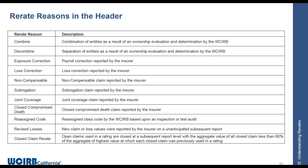The last re-rate reason is 'closed claim re-rate.' This occurs when claims are closing at subsequent report levels and the aggregated values of those claims is less than 60% of what was previously used in a rating. For closed claim re-rates, we use subsequent report level values to calculate the experience modification. Rather than using first, second, and third report levels, we advance to second, third, and fourth values. It's important that insurers be aware of this because we're using different report level values.